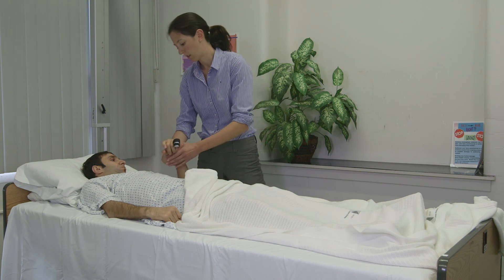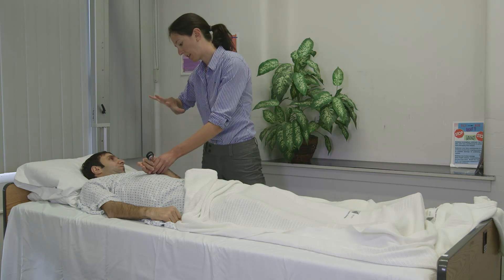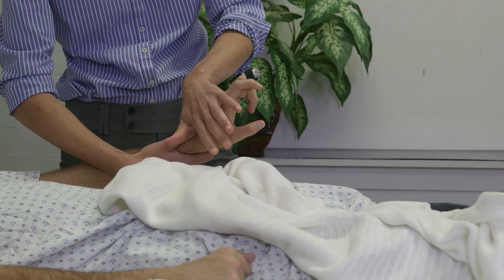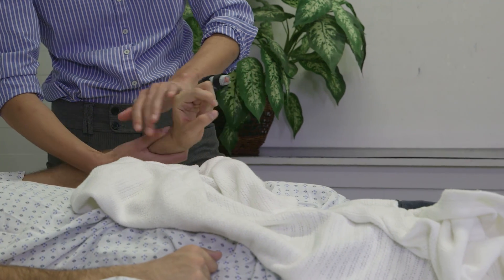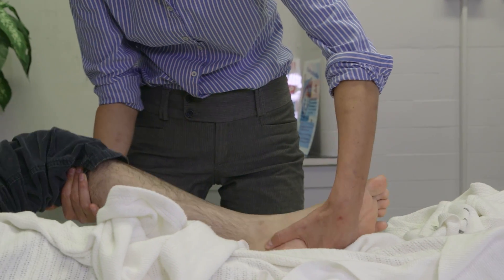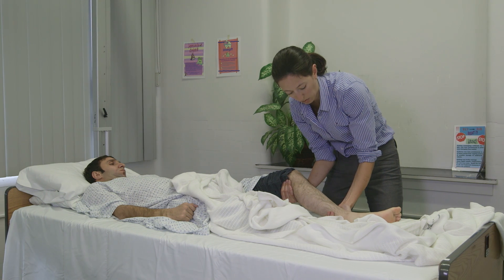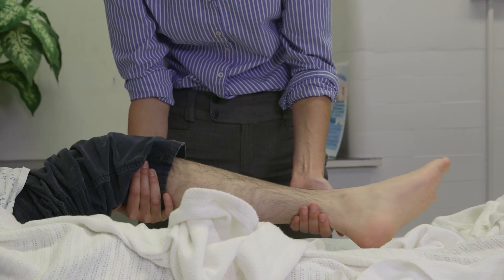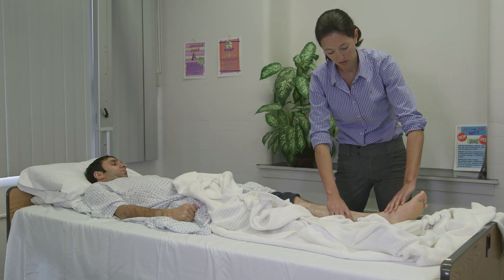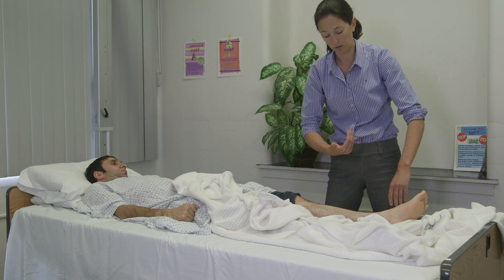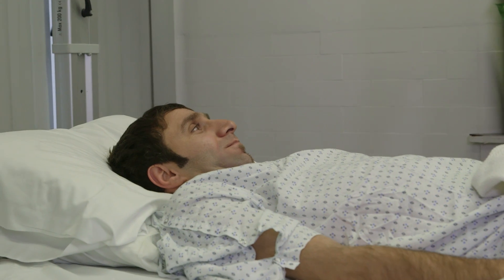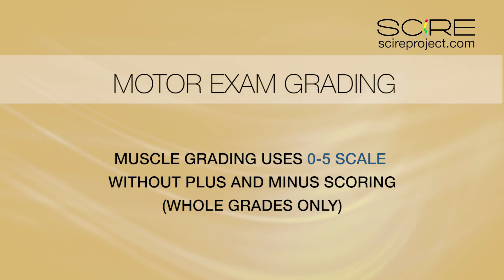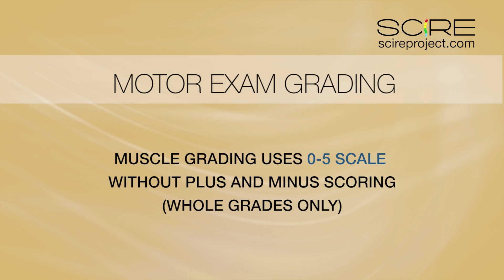Muscle testing for the ISNCSCI exam is always performed in the supine position. This is a distinct difference from muscle testing in other clinical settings where the patient changes position repeatedly. The supine position allows continuity from the time of injury, when the spine may be unstable and the patient is not allowed to be moved, through to reassessment in rehab and community settings. Muscle grading uses a 0 to 5 scale without qualifiers like plus or minus or half scores.